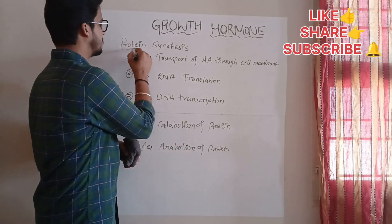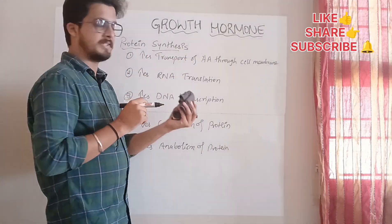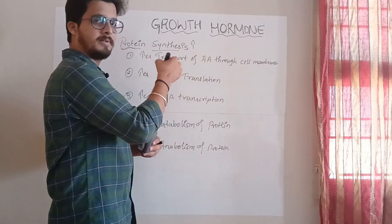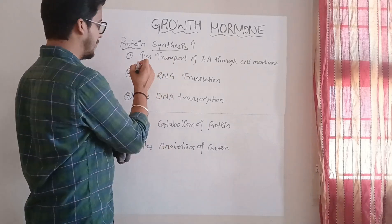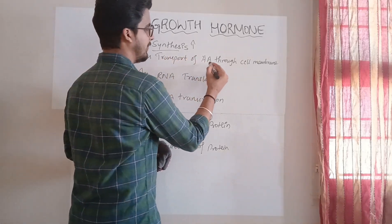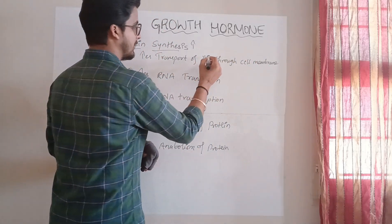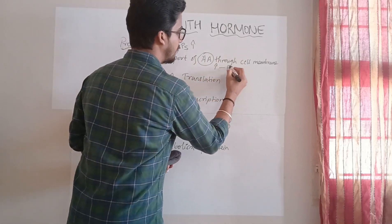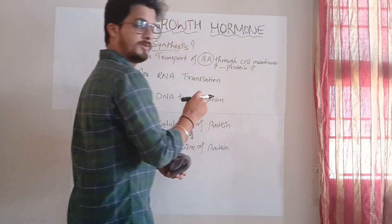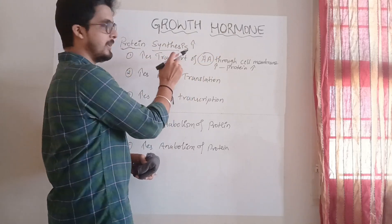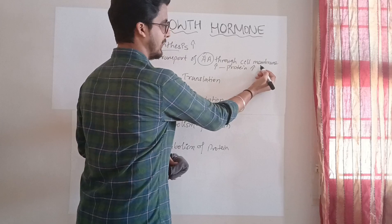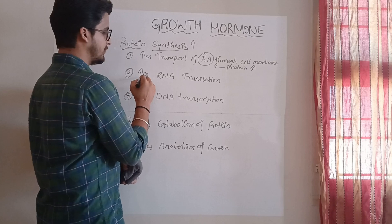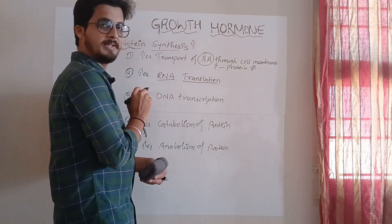Next, protein synthesis. The main action is that growth hormone increases protein synthesis. How does growth hormone increase protein synthesis? The first action is that it increases the transport of amino acids through the cell membrane, so that amino acids enter the cell and protein synthesis is accelerated. The second process is that it increases RNA translation.